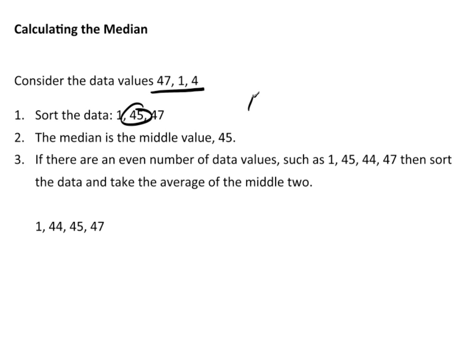So we say that M, assuming this is sample data, M equals 45. Now I notice there are three numbers here, so that's an odd number of values. If there's an even number of data values, such as 1, 45, 44, and 47, then once again we still have to sort the data. But now we're going to take these middle two values and find the average. So the average of 44 plus 45 over 2 is 44.5. This is the value we would identify as the sample median.